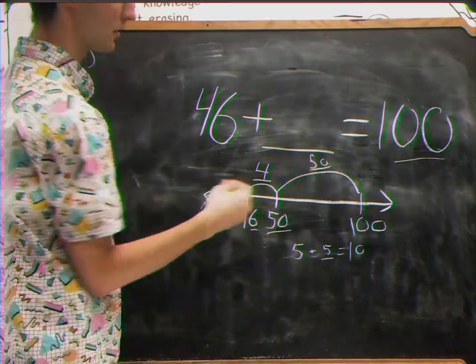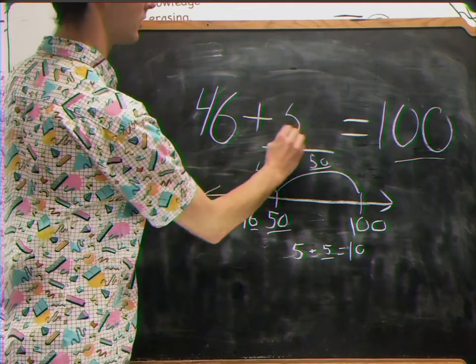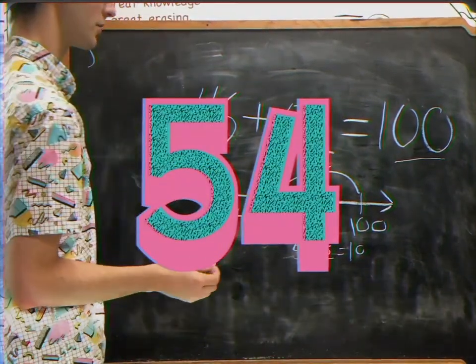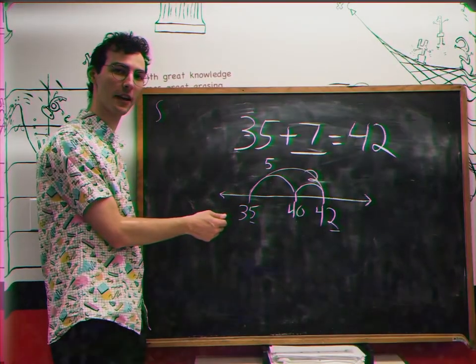And if you put these two jumps together, you'll get the answer. And that's how you can stop finger counting.